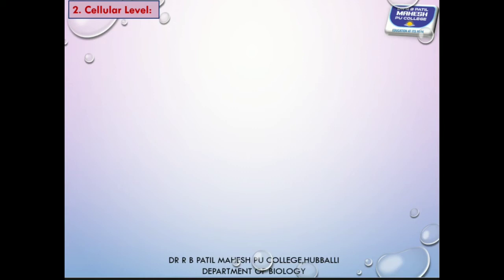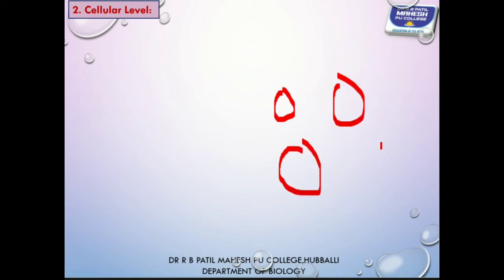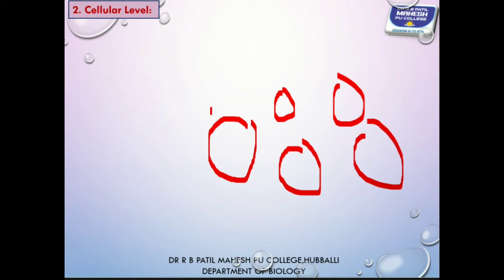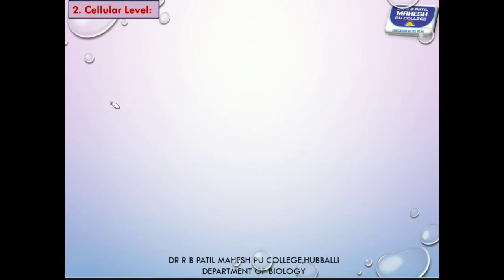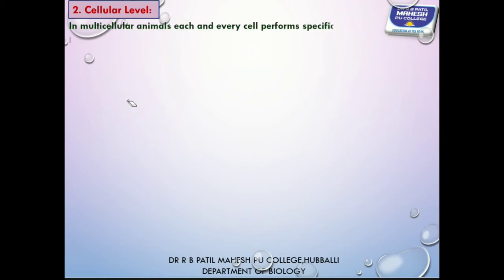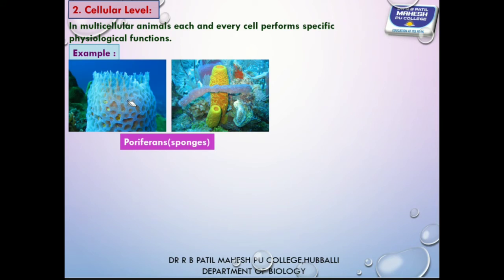Primitive multicellular living organisms exhibit cellular grade of organization. In cellular grade, a group of loosely arranged cells perform all physiological functions of the body. These cells do not aggregate to form tissues — tissues are absent. This grade of organization includes only one phylum, Phylum Porifera, commonly called sponges.